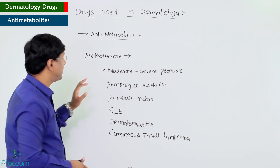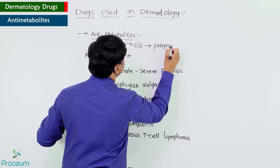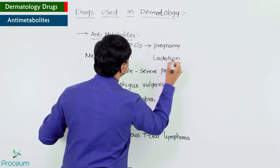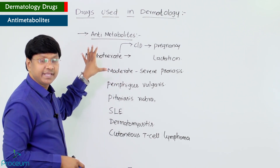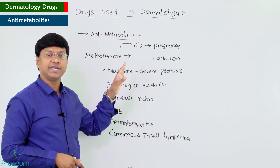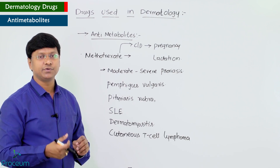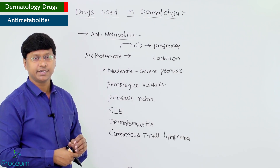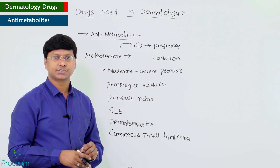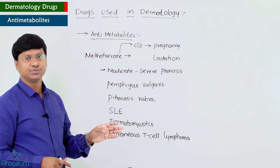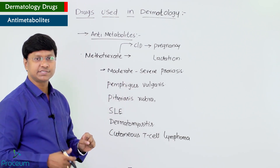The absolute contraindications of methotrexate include pregnancy and lactation. This is because methotrexate inhibits folic acid formation. During pregnancy and lactation, folic acid is very important for fetal survival and organogenesis, and methotrexate would act as a teratogen.